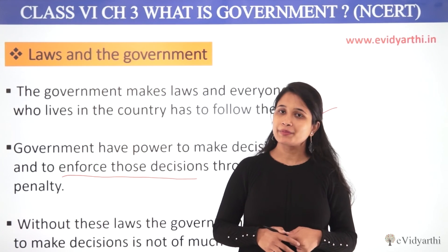For instance, if the government says that if you drink and drive, you will have to pay a fine of 50,000, or you will go to jail for a week — no one wants that. So no one wants to drink and drive. They will say we can't take a penalty, so we will take a taxi instead. This is how the government enforces its decisions through penalty — fines and jail.